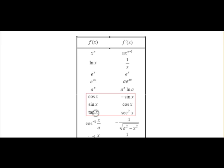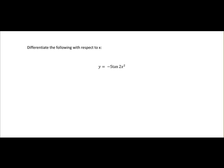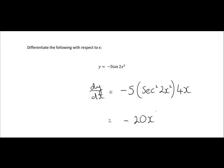Onto our next example: we have minus 5 times tan(2x²). We check what tan differentiates to — tan(x) differentiates to sec²(x). So dy/dx is minus 5 times tan differentiating to sec²(2x²). We must also differentiate the number beside tan: when we differentiate 2x², we get 4x, and we multiply by that. Minus 5 by 4x gives us minus 20x times sec²(2x²).